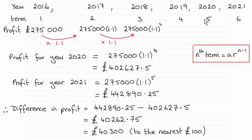Okay, and the fifth term corresponds to 2020 and the sixth term corresponds to 2021. So all I've done is just substituted those values into this formula here to work out the profit for the year 2020 and the year 2021, and then just worked out the difference.